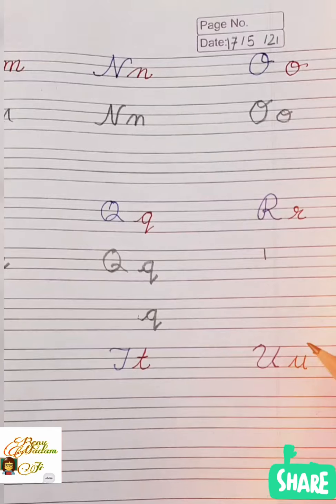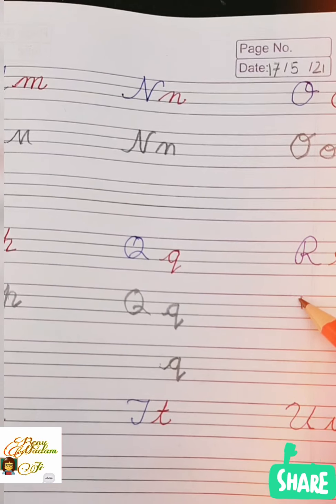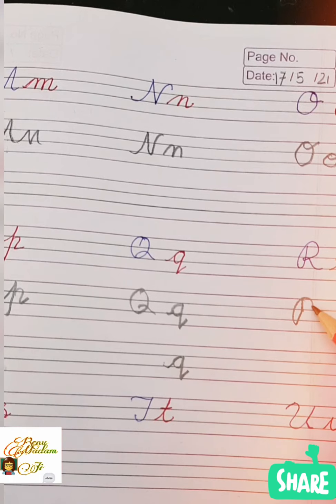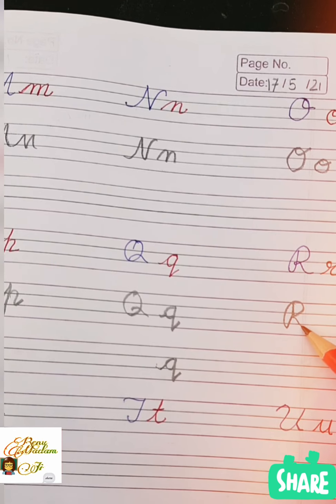Then come to the R. Draw a standing line, then up, half circle, one tail, just like that. Clear? This is our small R.